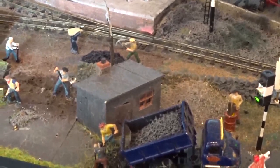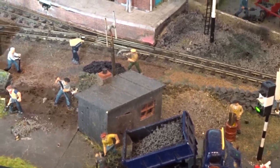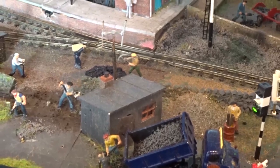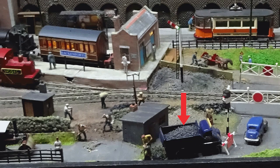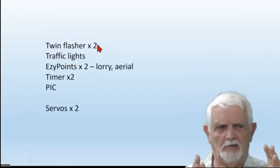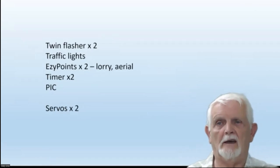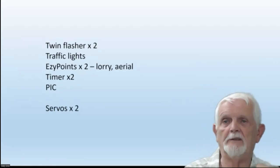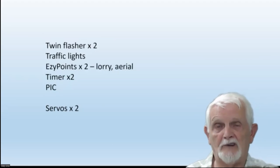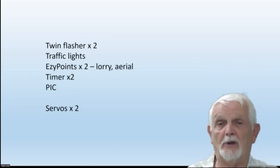A small one also we have is the hut. It's got the old fashioned big H aerial, which also from time to time rotates. This lorry also tips every so often on a timer. So we've got a twin flasher for the beacons in front of the lorry where the road works are, and also to operate the crossing lights, two timers, a PIC, two servos, two easy points. We're racking up quite an amount of electronics here, as you've probably noticed already.